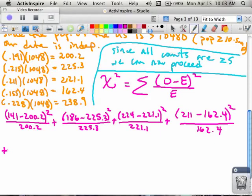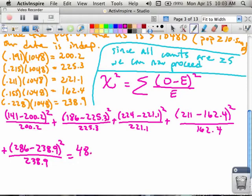Plus the last one is 286 from the table again, minus what we calculated, 238.9 squared all over 238.9. Now when you get done, this is your chi-square value. So I get 48.2. This is equal to chi-square. This is called your test statistic.